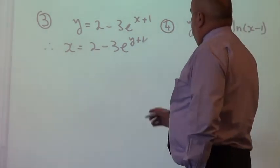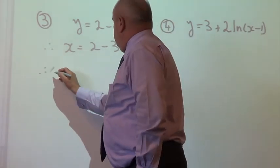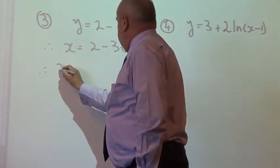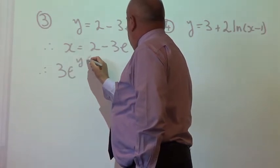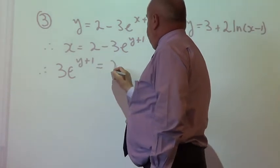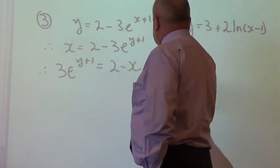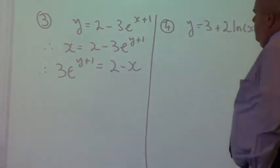What are we going to do now? Well, I would recommend we take this over here, the exponential expression, over to the other side. And while we are at it, what we're going to do is subtract x from both sides. So we end up with 2 minus x.